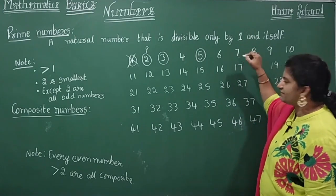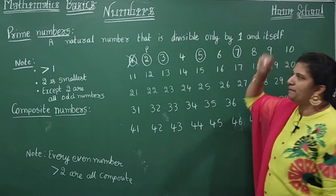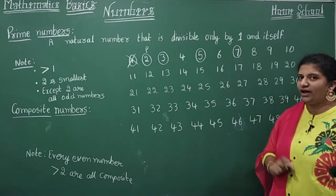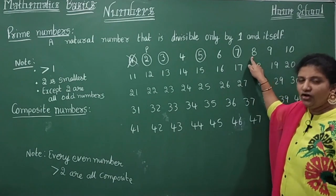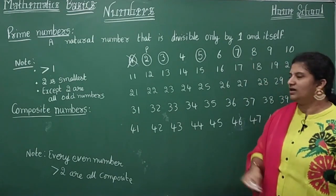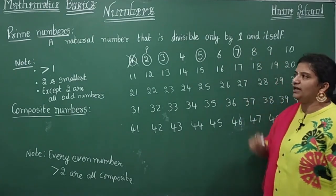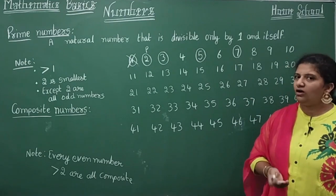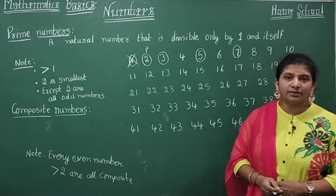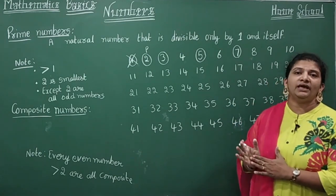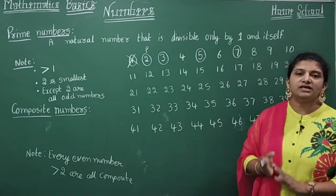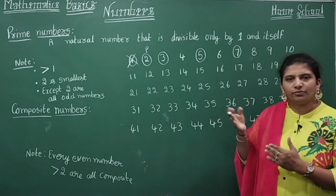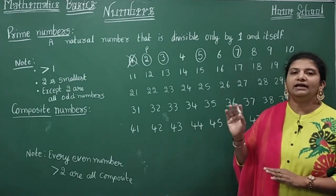Seven — you don't see seven in any other table, so seven is divisible by one and itself; therefore seven is a prime number. Eight — we've seen it in the two and four tables: two fours are eight, four twos are eight — so eight is not a prime number. Nine — three threes are nine, so nine is also not a prime number. Ten — two fives are ten, so ten is not a prime number. A prime number should not have other factors; it is divisible only by one and itself.